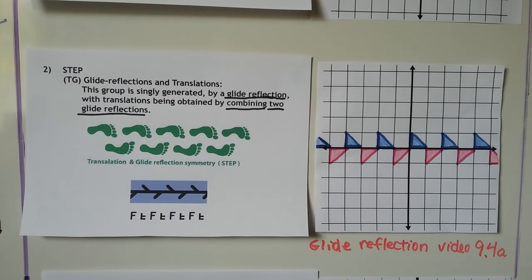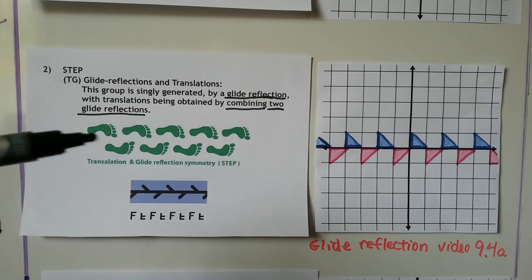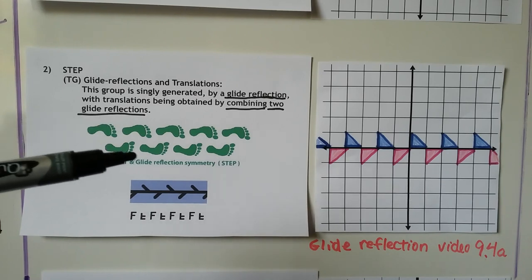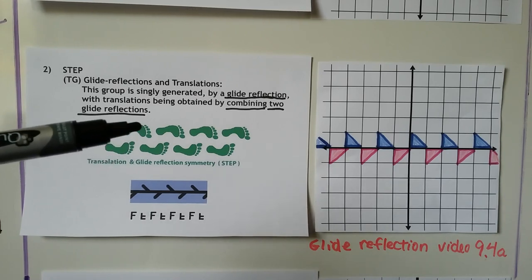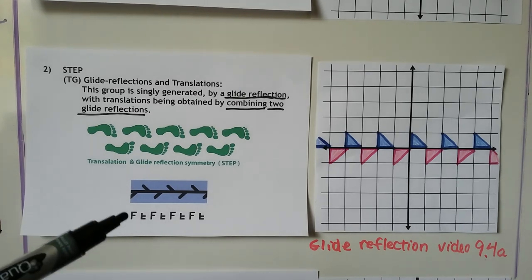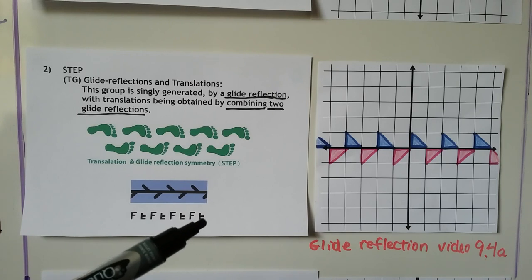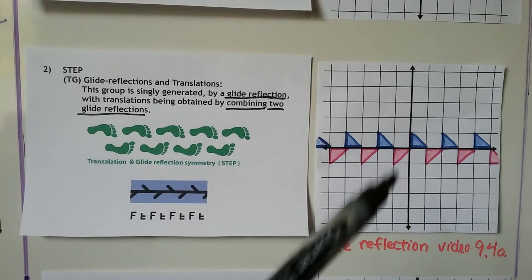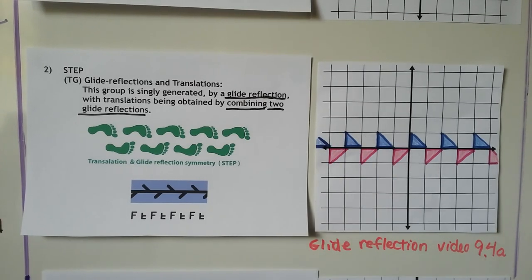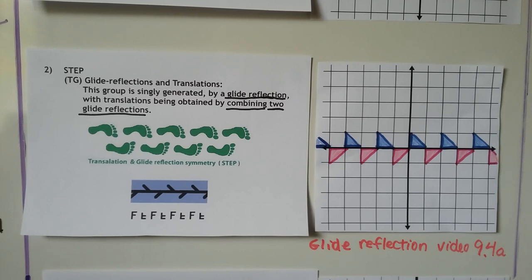Our second category of freeze patterns is a step. We have glide reflections and translations, and this group is singly generated by a glide reflection, with translations being obtained by combining two glide reflections. The toes are pointing to the right and the arch translates and reflects repeatedly. It would be a pattern like this, or if we took the letter F it would look like this — they would all be blue, but some are made red so you can easily see the reflection. We talked about glide reflections back in video 9.4a.